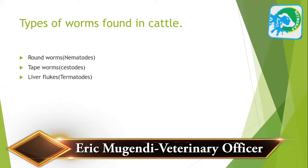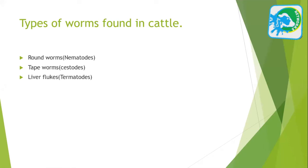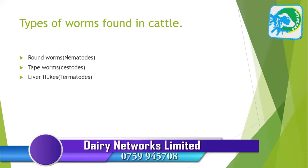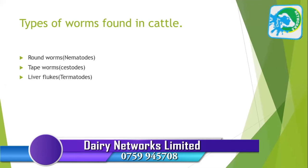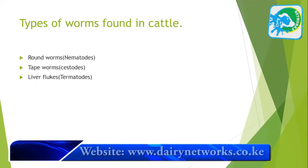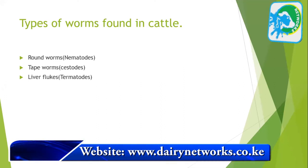There are different types of worms found in cattle. In most practices we find majorly at least three types. The number one type is roundworms, which are found in the rumen, the abomasum (the second stomach), the small intestines, and the large intestines — found all over. Then there are the tapeworms, which are the cestodes.